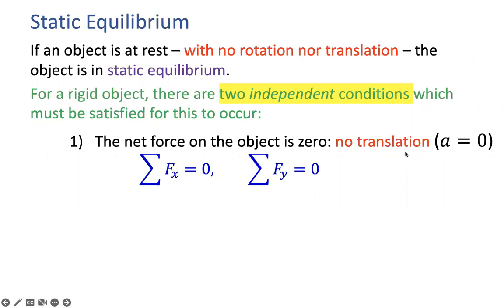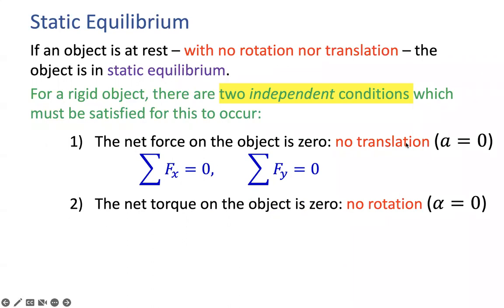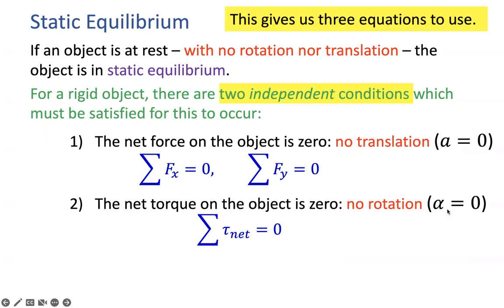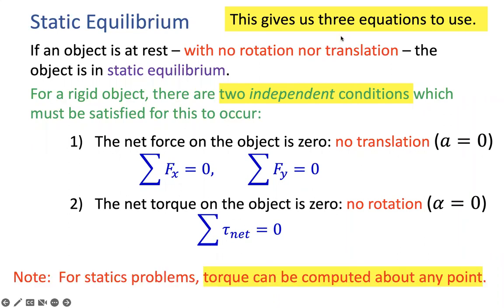The total net force equals zero, there is no acceleration — first condition satisfied. Condition number two: there should not be any rotation, meaning the net torque should be zero. There is no rotational effect by any of the forces. If net torque equals zero, then from net torque equals I times alpha, alpha is going to be zero. So whenever solving any problem involving rotation or equilibrium, these three — net force along x, net force along y, and net torque around the axis of rotation — give us three equations.